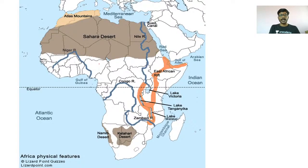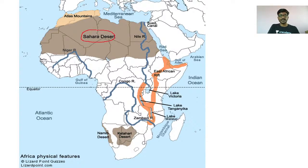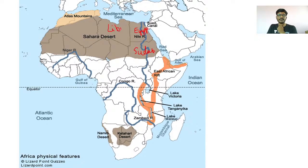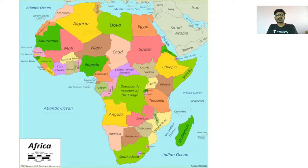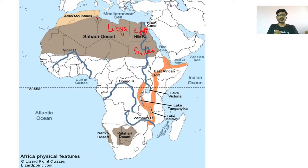Now look at some important geographical locations on the Africa map. You should look at the Sahara Desert. The Sahara Desert is spread across this region — this is Sudan, Egypt, then Tunisia and Algeria.